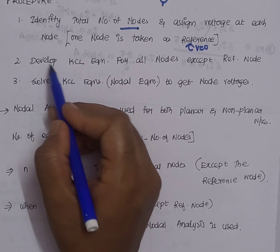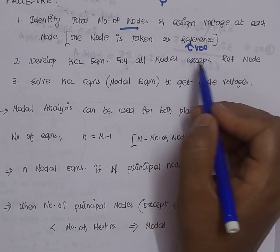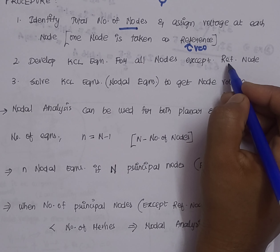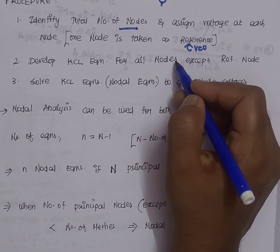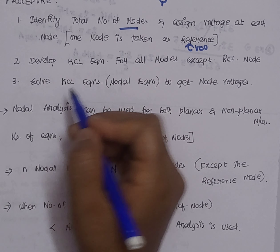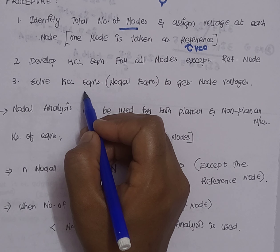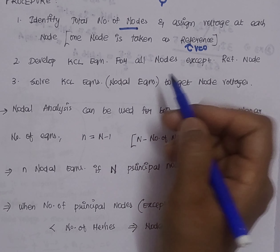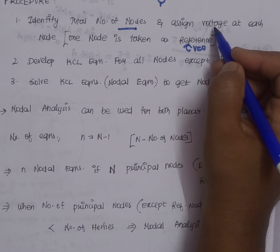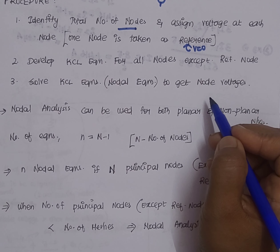The second step is to develop the KCL equation for all nodes except the reference node, which is usually the grounded node. The third step is to solve the nodal equations obtained to get the corresponding nodal voltages V1, V2, V3 which we have assigned. These are the three steps for nodal analysis.